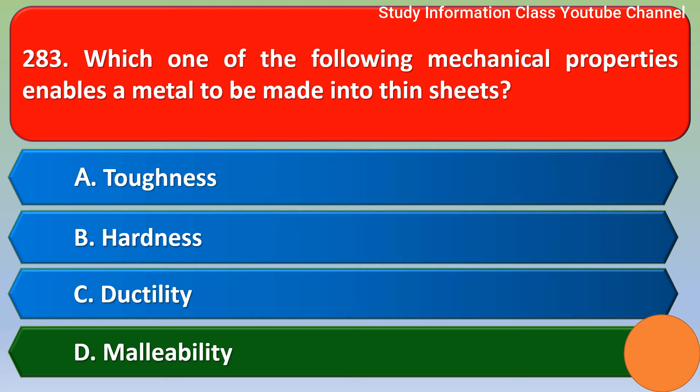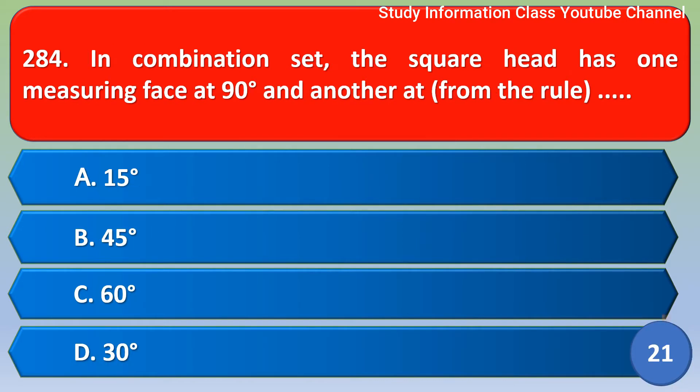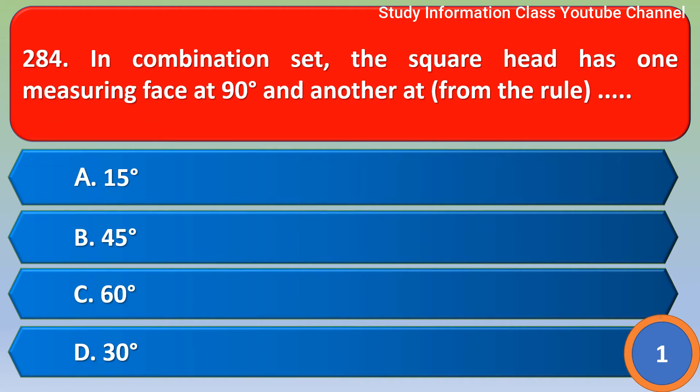In combination set, the square head has one measuring face at 90 degrees and another at 45 degrees from the rule. The right answer is 45 degrees.